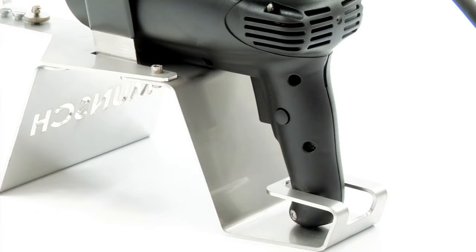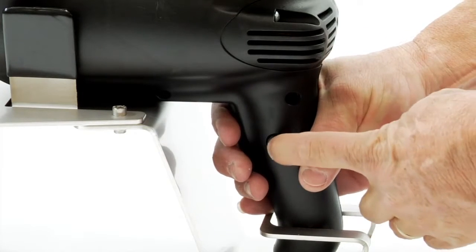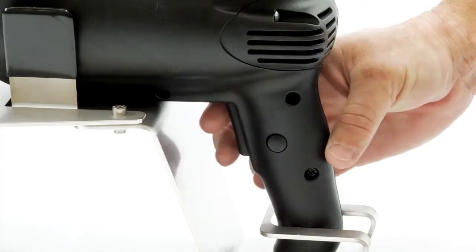The trigger lock button is located down on the handle. Push to lock the trigger in place. To unlock, squeeze the trigger once.